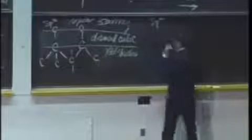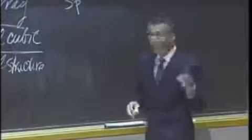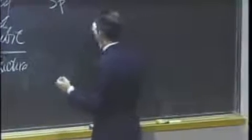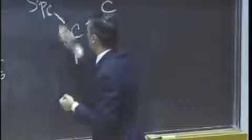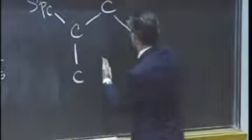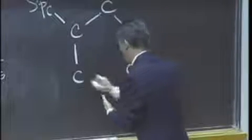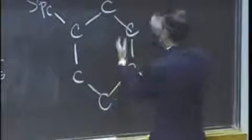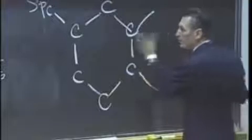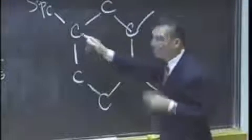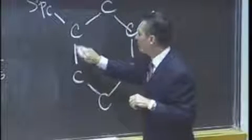Now, if carbon instead hybridizes sp2, we know that we have three bonds identical lying in the plane. So here's the carbon — carbon, carbon, carbon — and this one has one, two, and three over here. And what are we seeing here? We're seeing a hexagonal pattern. This is just three of the bonds.